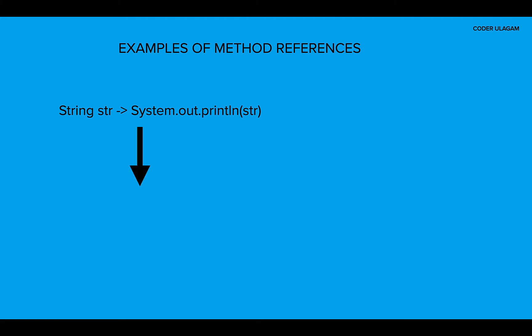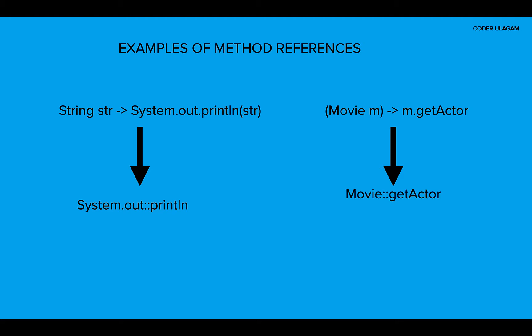Let's see some examples of method references. Here, we are trying to print a string using lambda expressions. This can be written in a much simplified way using method reference — all we have to do is use System.out::println, which calls the println method using method reference. The general syntax, like class.method, can be replaced with ClassName::methodName. For example, a custom Movie object where we need to get an actor can be converted from a traditional lambda expression to Movie::getActor, which is much more readable.